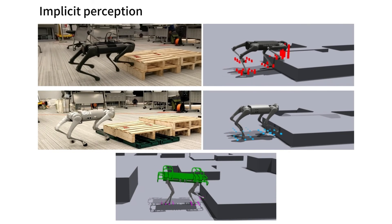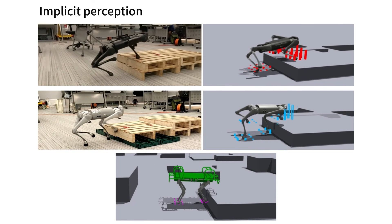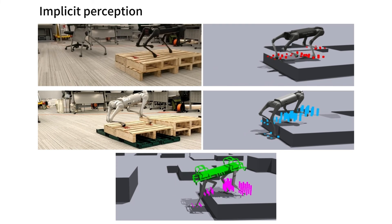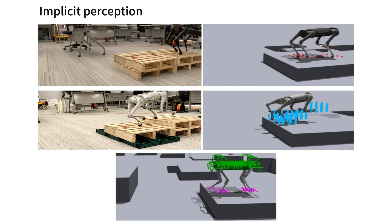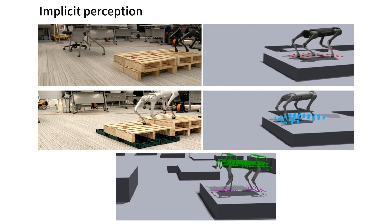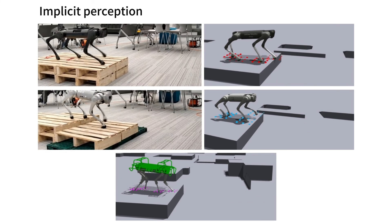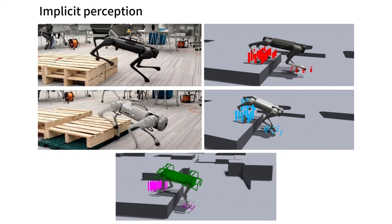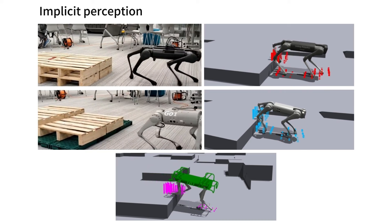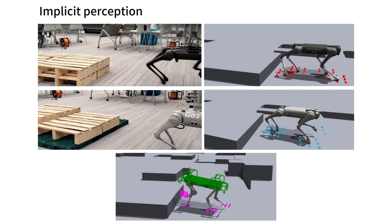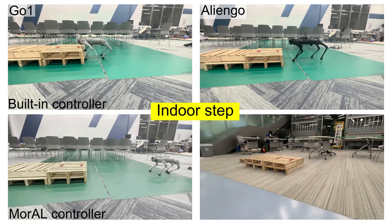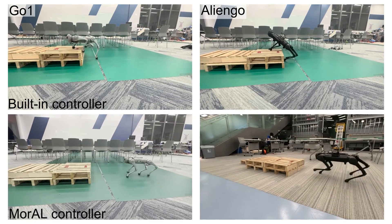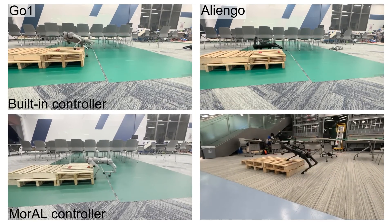We further investigate the internal mechanism that empowers the robot to traverse challenging terrain. Essentially, this adaptive controller can reconstruct the terrain information using the morph net. For any kind of robot, our method can make it perceive the height of the terrain around it. Our proposed controller even outperforms the built-in controller, which is dedicated to traversing the stairs.